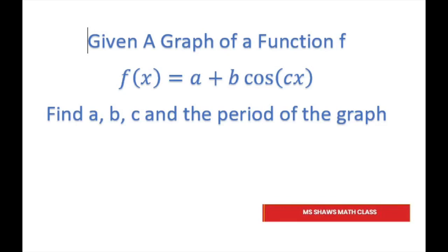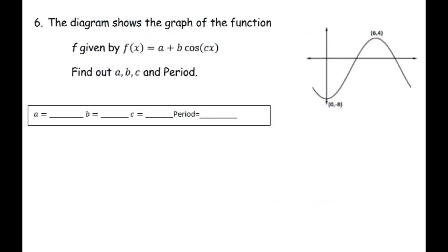Here is our first diagram. We have this function and we have different labeled points. So we have to fill in this formula here. And it is cosine, so that's helpful. I noticed that it's a reflection — usually cosine starts right here at 1 and then goes this way. So it is a reflection.